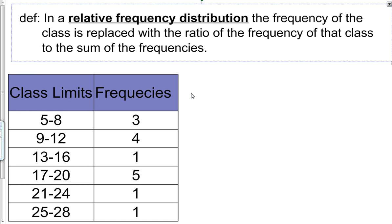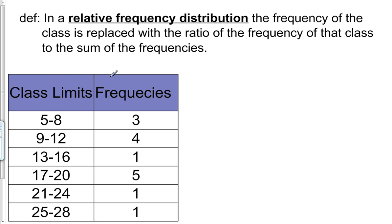Today we're going to talk about the cumulative and relative frequency distributions. The first one we're going to look at is the relative frequency distribution. In a relative frequency distribution, we're going to replace the frequencies in this column with the ratio of the frequency of a specific class to the sum of all these frequencies.